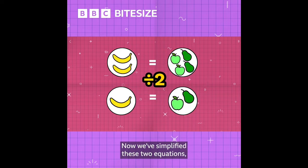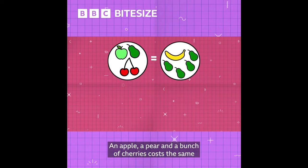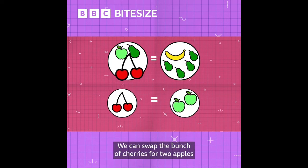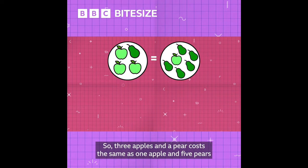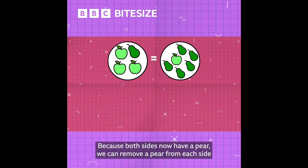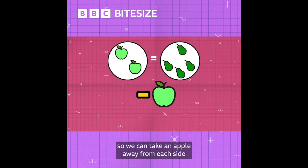Now we've simplified these two equations, we can put this information into equation three. An apple, a pear and a bunch of cherries cost the same as a banana and four pears. We can swap the bunch of cherries for two apples, and swap the banana for an apple and a pear. So three apples and a pear cost the same as one apple and five pears. Because both sides have a pear, we can remove a pear from each side. Both sides also have an apple, so we can take an apple away from each side.